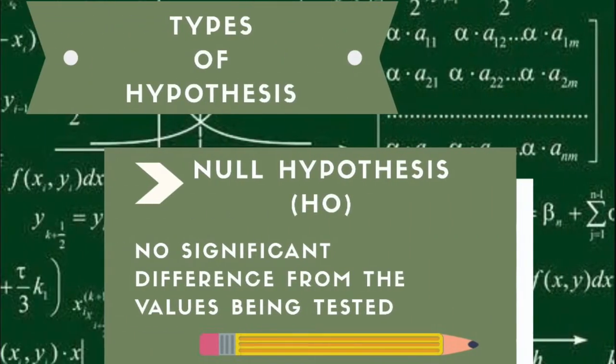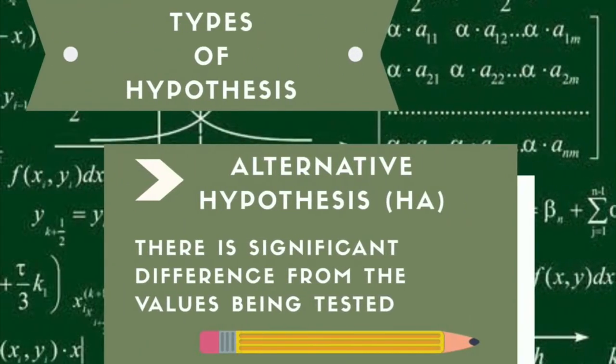Moving on to the types of hypothesis. First is the null hypothesis, which has the symbol H0, indicating that there is no significant difference from the values being tested. On the other hand, the alternative hypothesis, which has the symbol HA, is indicating that there is significant difference from the values being tested.